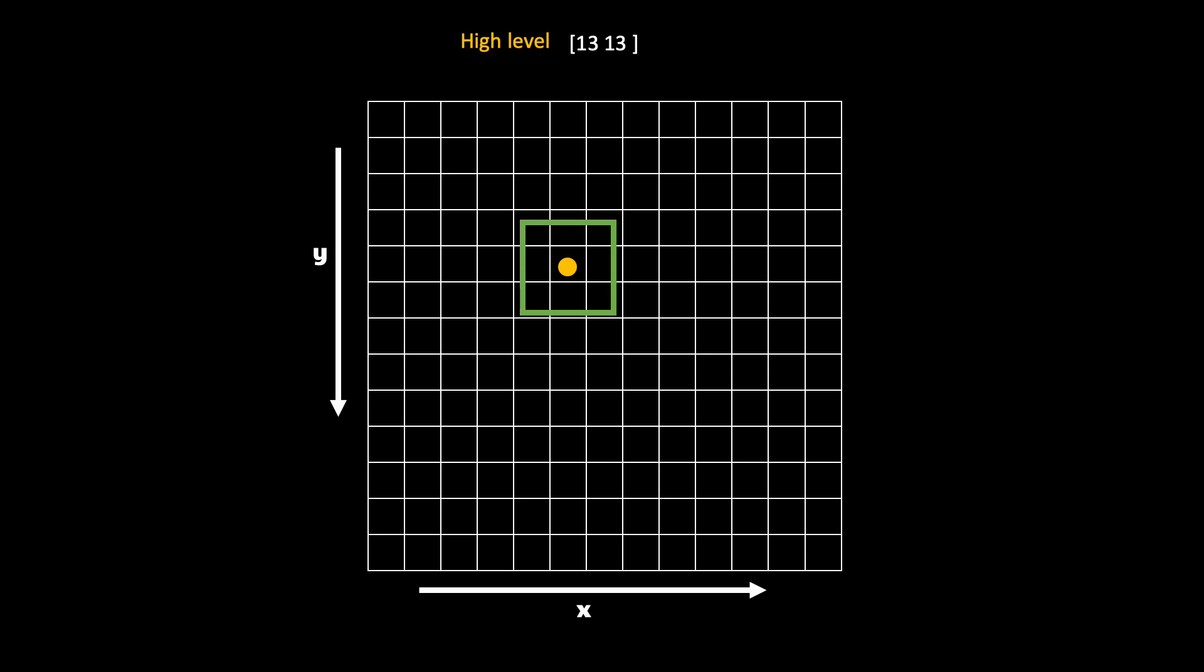Here I am using the high level feature map of size 13 by 13, but all that I will explain will apply to other feature maps extracted from the backbone. In the current grid, there is a ground truth box for a pixel where the orange dot is. Let me zoom on it.